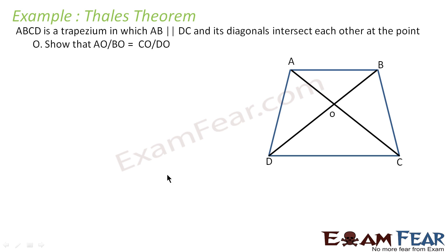ABCD is a trapezium in which AB is parallel to DC and its diagonals intersect each other at point O. We have to prove that AO by BO is equal to CO by DO. Let's approach this problem. AO by BO doesn't make much sense to me directly. If it is AO by AC, it makes some sense.